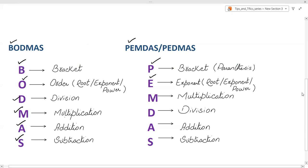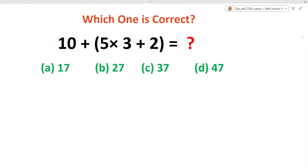Now let's see how we can solve our expression using this rule. So according to BODMAS, we have given 10 plus 5 multiplied by 3 plus 2, so we have to solve this bracket first.